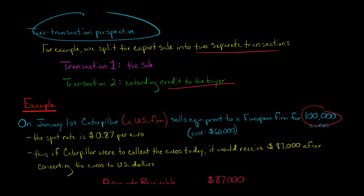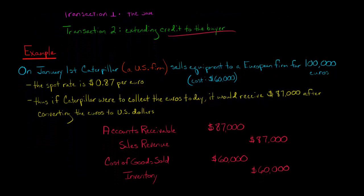However, we are assuming here that the company in Europe is not paying Caterpillar today. They're going to pay at some point in the future. So we're going to have to do a two-part transaction. And so the first part of the transaction, we're going to say,